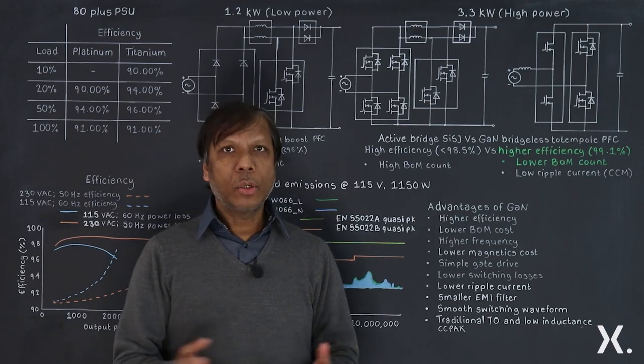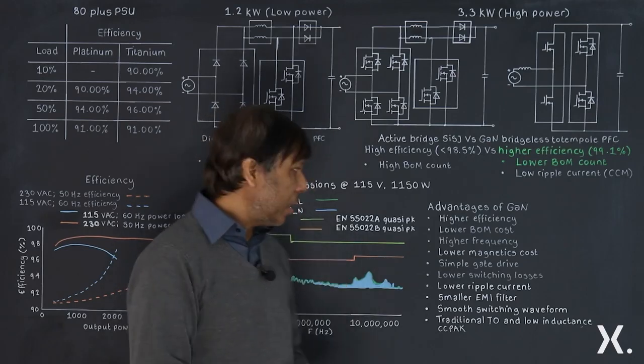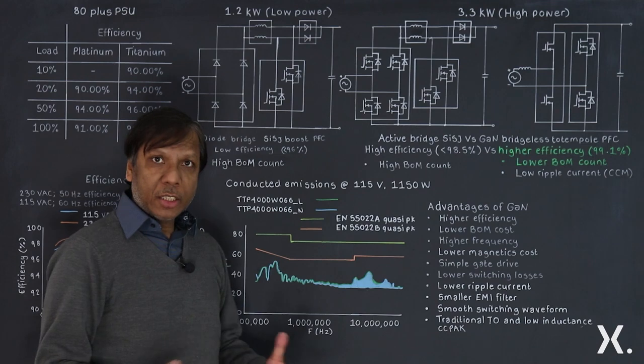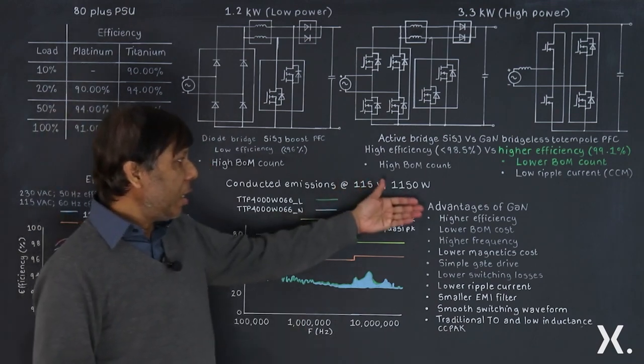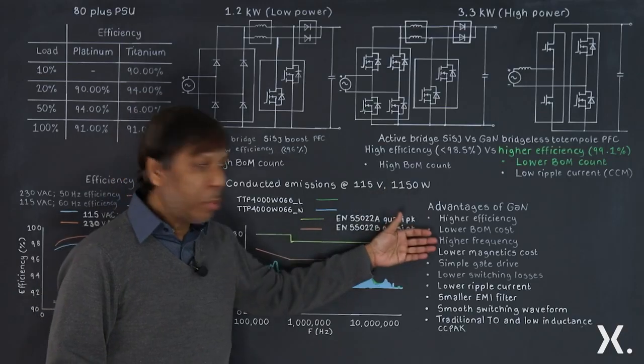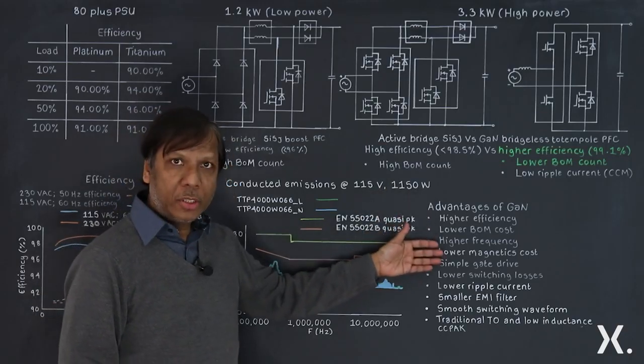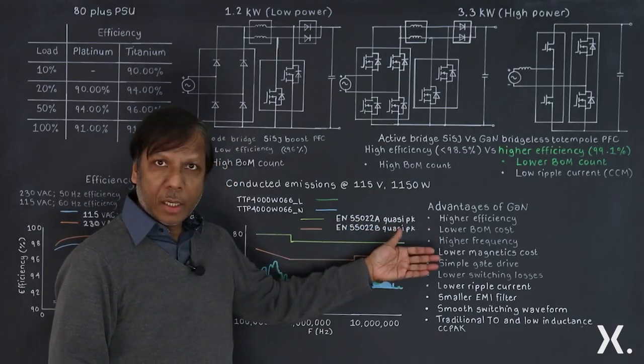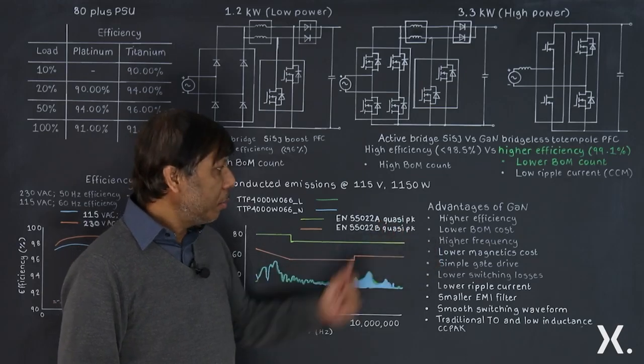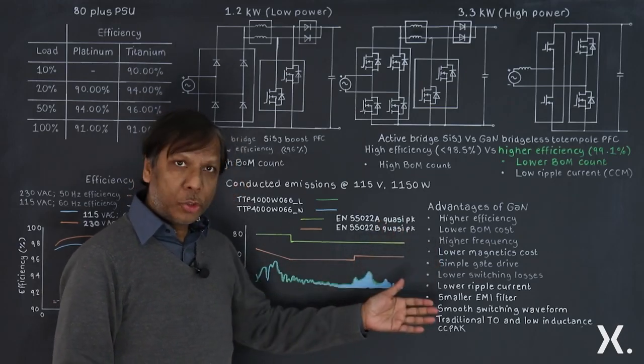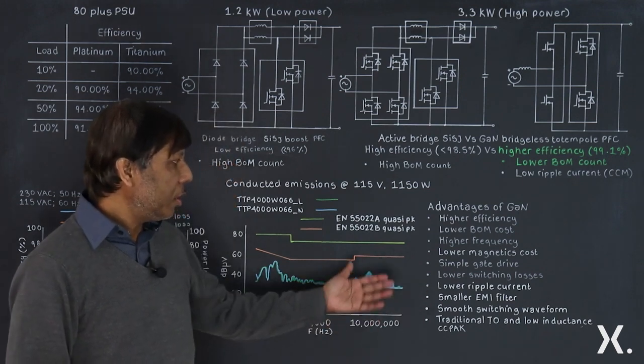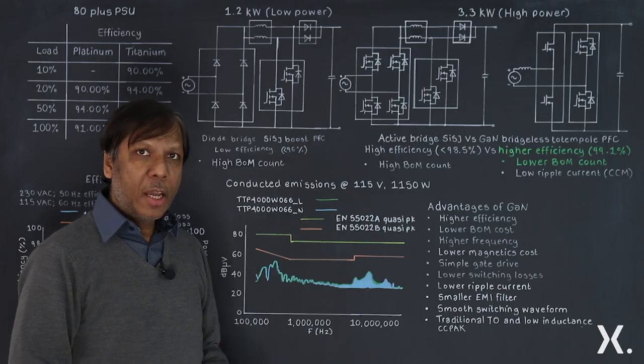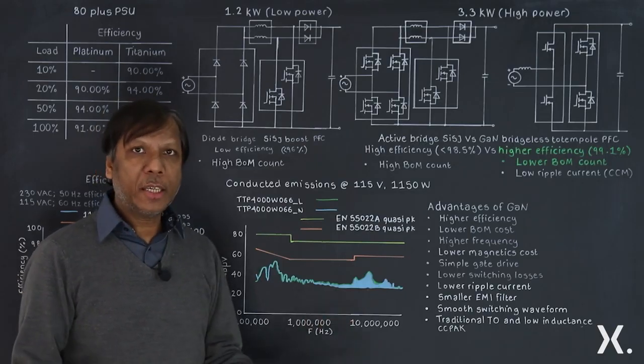If we can summarize the advantages of the power GaN devices, it offers high efficiency, lower BOM cost, higher frequency, lower magnetic cost, simpler gate drive, lower switching losses, lower ripple current, and a smaller EMI filter with smooth switching waveform. And these devices come in TO packages and the very low inductance copper clip packages, CC pack.